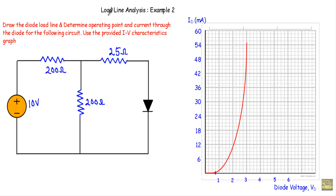In this video, I will show you another example of diode load line. This will be the second example. Draw the diode load line and determine the operating point and the current through the diode for the following circuit. Use the provided IV characteristics graph. I have to draw the diode load line for this given circuit and determine the operating point and the current flowing through this diode using this IV characteristics graph.